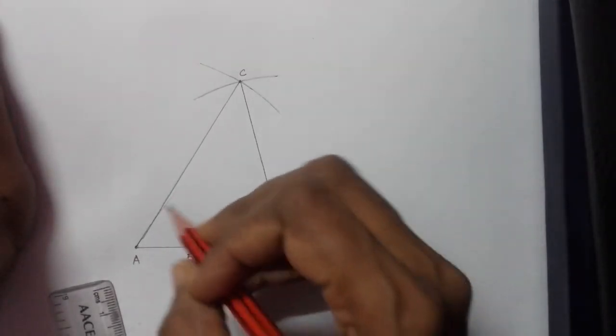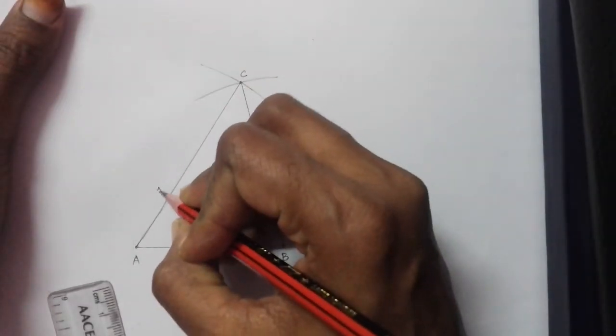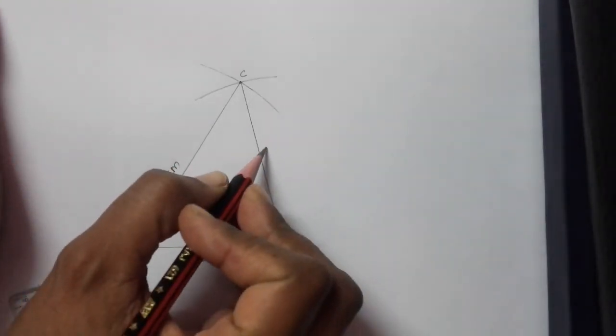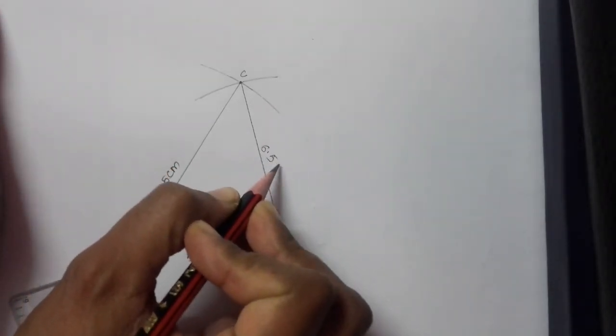And now, write the length here. AC is 7.5 centimeters. And this is 6.5 centimeters.